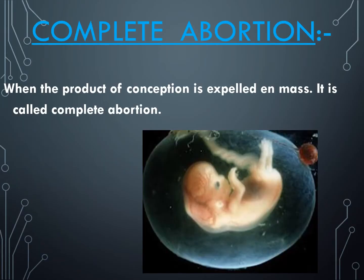The first type of abortion we are going to deal today is complete abortion. From the name itself, 'complete' — what do you understand is when the product of conception comes out of the woman's body completely without leaving behind anything. That is, no part of the placenta, the membrane, or the baby is left behind. When the product of conception is expelled en masse, it is called complete abortion.